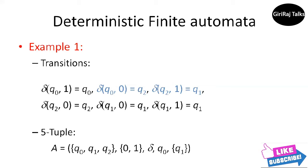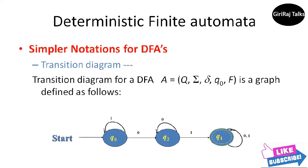The complete specification of the automaton A that accepts the language of strings with a 0,1 substring is: A equals ({q0, q1, q2}, {0, 1}, delta, q0, {q1}). The three states belong to Q, the two inputs form sigma, delta defines the transition function, q0 is the start state, and q1 is the final state. These are the five tuples included in the finite automaton.